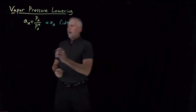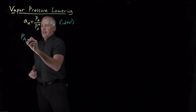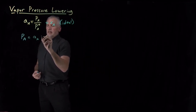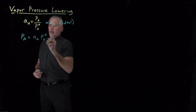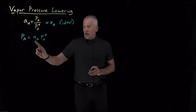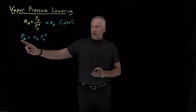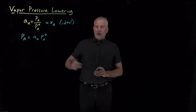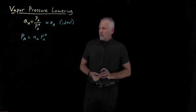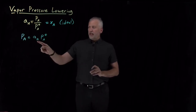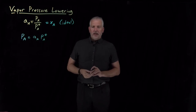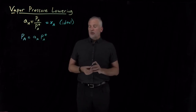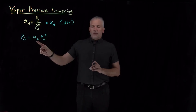If we know the activity, we can predict the partial pressure of A above a mixture as the activity times the vapor pressure. The activity, even if A is a solvent and it's a nearly pure solution with only a little bit of something else dissolved in it, the activity of A is always going to be less than one.